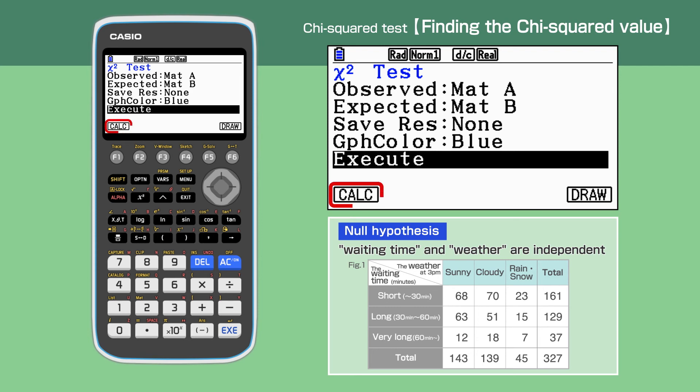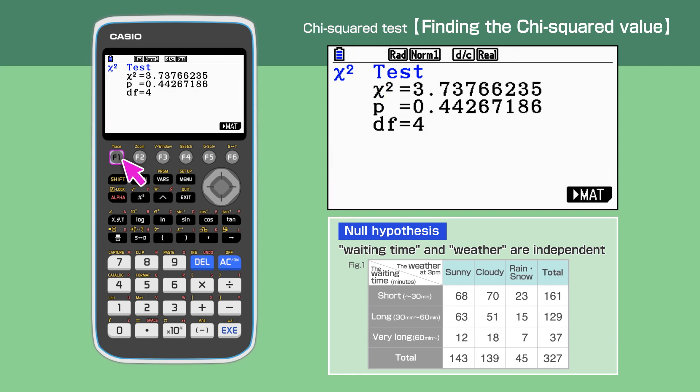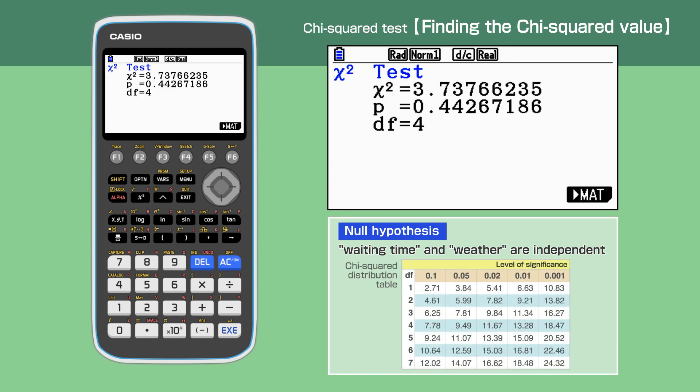From the chi-squared distribution table, the critical value is 9.49 when degree of freedom is 4 and the level of significance is 5%. The chi-squared value calculated is 3.74, which is smaller than the critical value. Hence we accept the null hypothesis: weather and waiting time are independent.